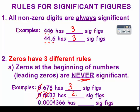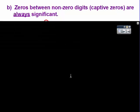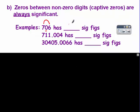For the last example of leading zeros, none of the leading zeros count, and you have four significant figures. Zeros between non-zero digits, or captive zeros, are always significant. So this zero is between the seven and the six, and so it has three significant figures because the zero would count. For the next example, it doesn't matter that there are two zeros between the one and the four — all of them count, giving you six significant figures.